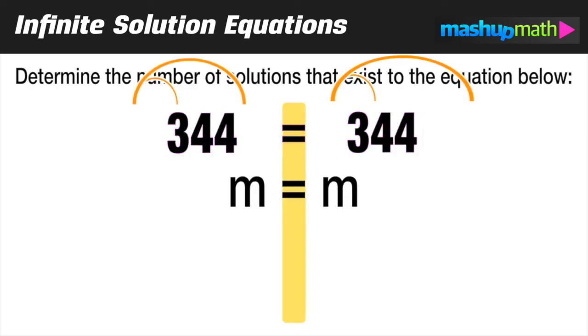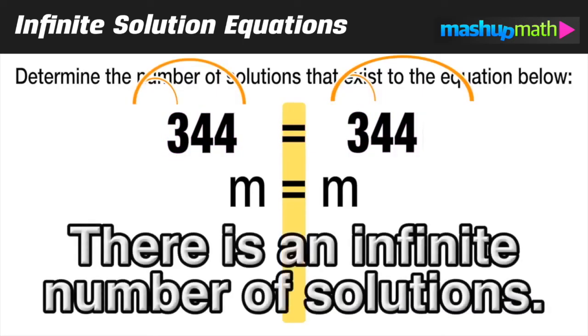And 2 times 172 again is equal to 344. You can try this for any possible value and you'll get the same value on the left side as you do on the right side. So our answer is that this equation has an infinite number of solutions since any value will work for m.